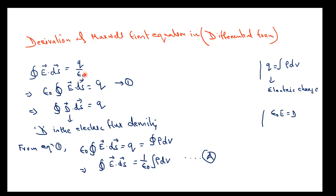We can rearrange to write ε₀∫E·ds = Q. We also know the relation ε₀E = D, where D is the electric flux density, also called displacement flux density. As E increases, the displacement D also increases.